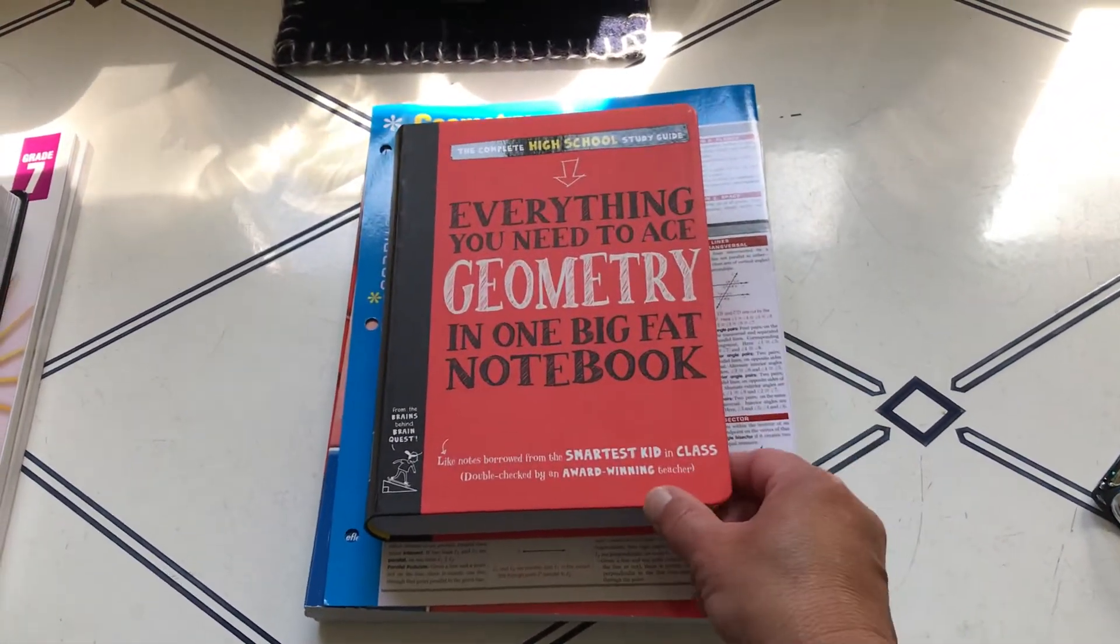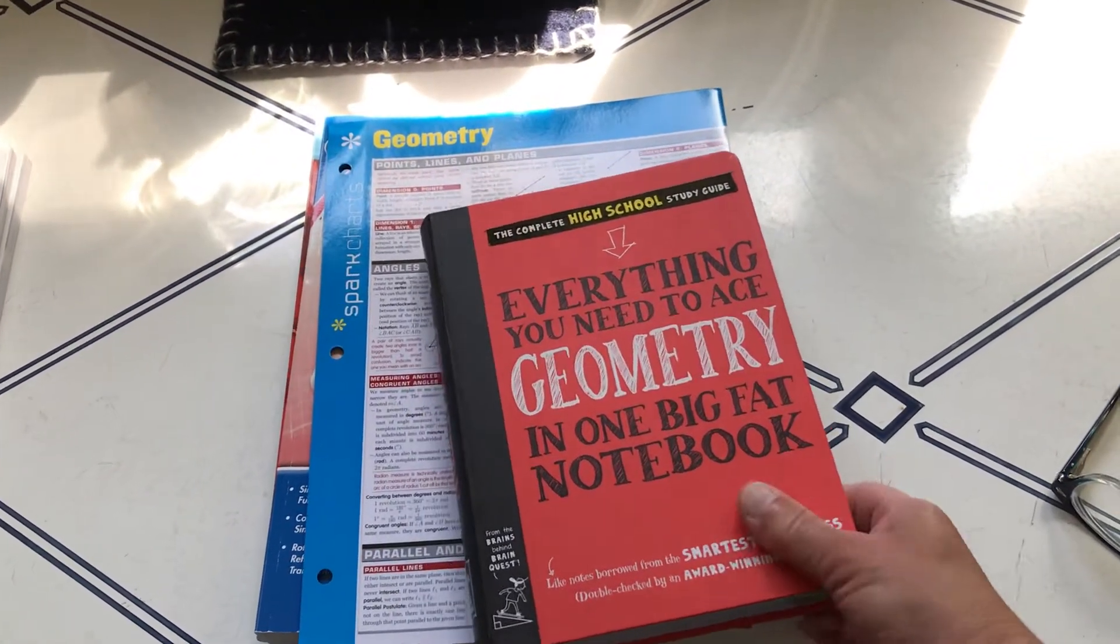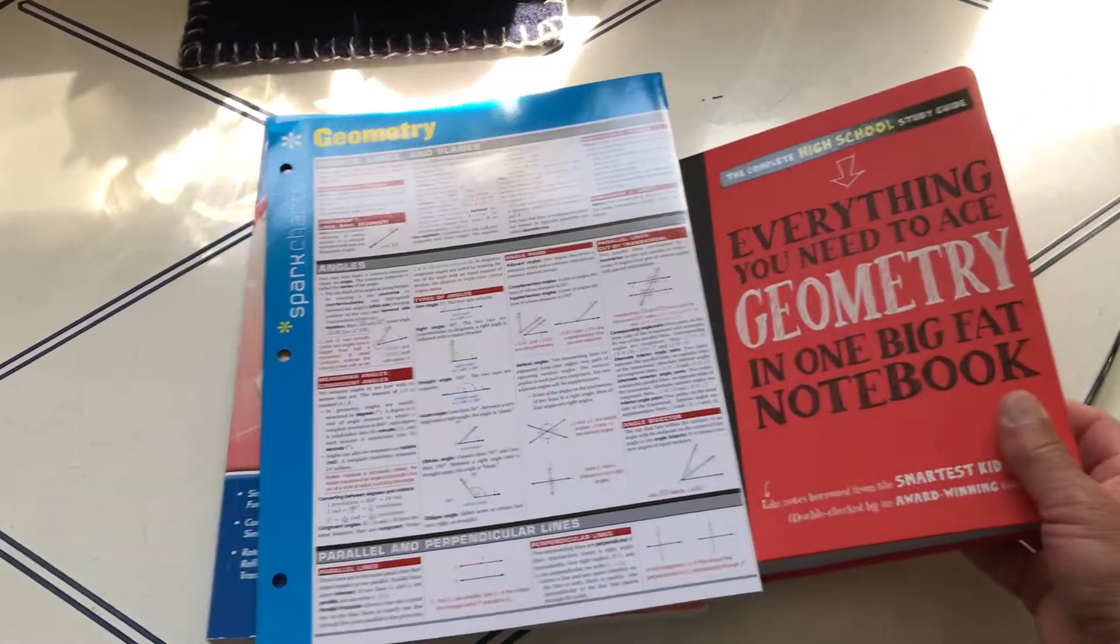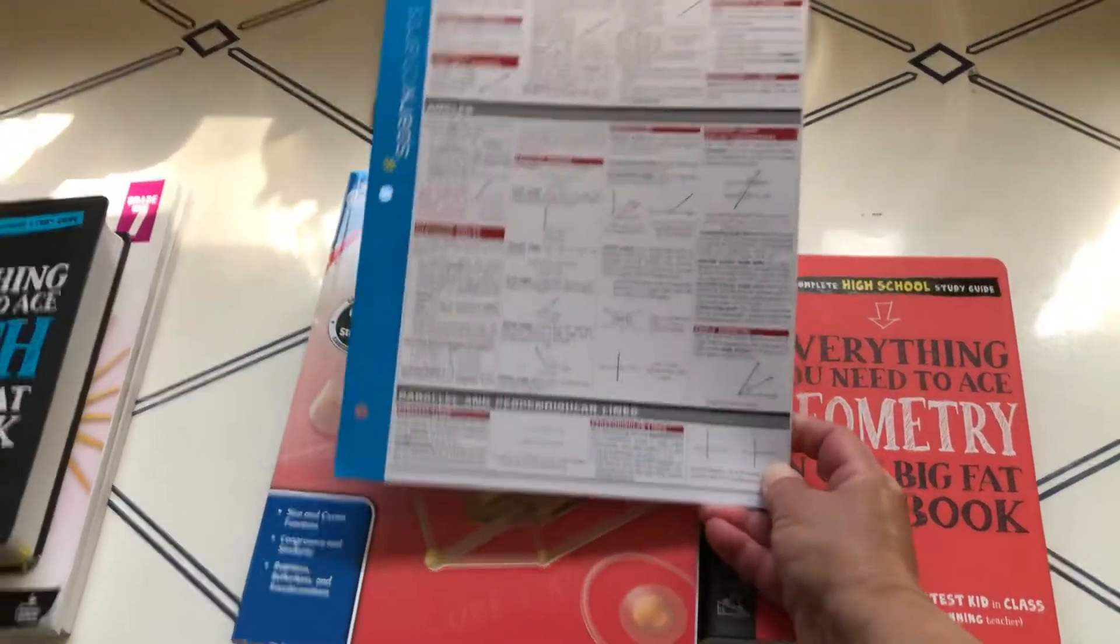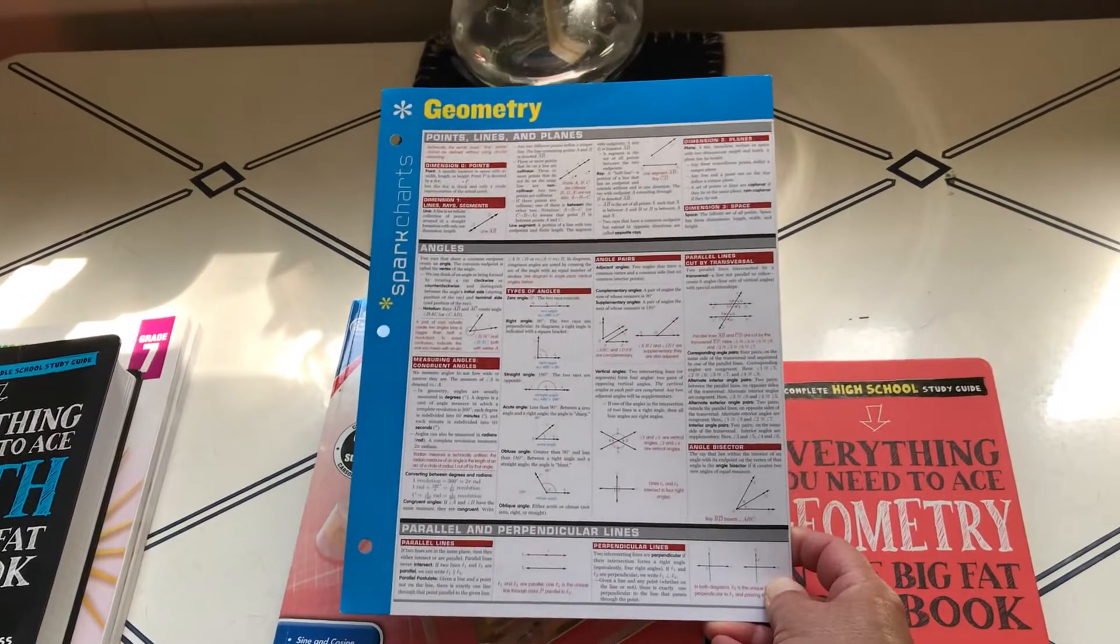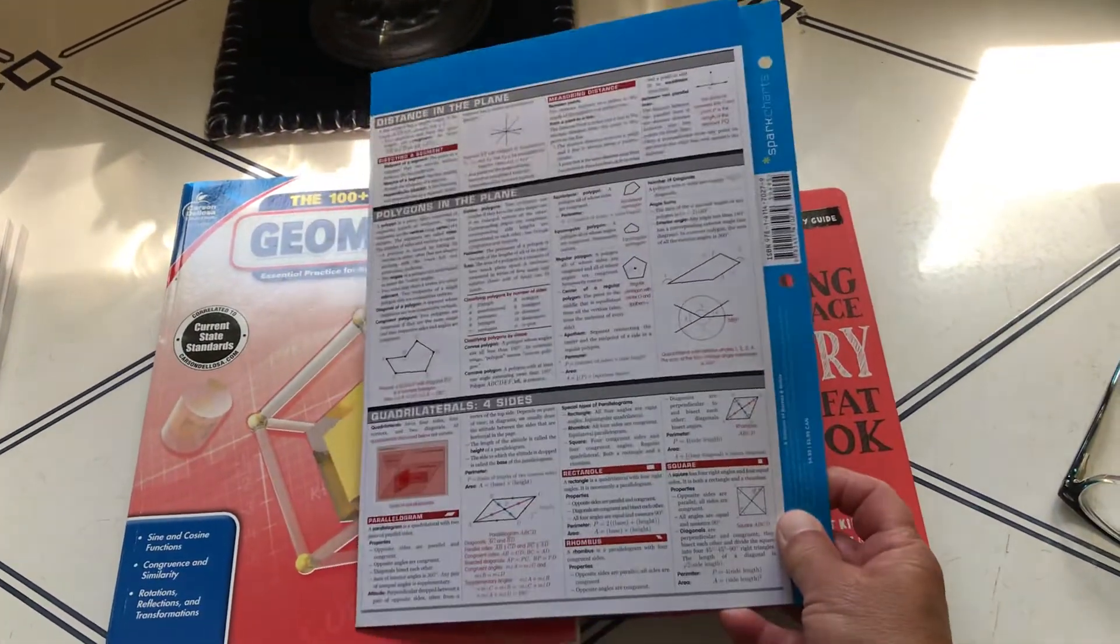I went with those and I finished that the end of April. So then I segued over to Everything You Need to Ace Geometry in One Big Fat Notebook. I also picked up, don't want to break my glasses, a Spark Chart at Barnes and Noble.